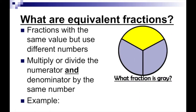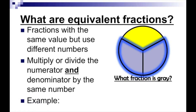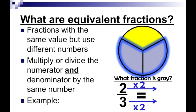Here's another example. What fraction is gray? There are two pieces that are gray out of a total of three pieces, so that fraction is two-thirds. But how can I write that differently? If I multiply the numerator and denominator both by two, each of these pieces will now have two in it. So two-thirds becomes four-sixths, because I'm putting two pieces in each one — six total pieces, four of which are gray.